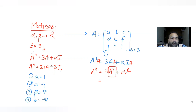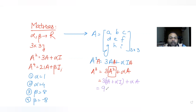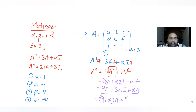I can further substitute A², since I already have it: A² = 3A + αI. So instead of A² I write 3A + αI, giving 3(3A + αI) + αA = 9A + 3αI + αA. Taking A common from the A terms, I get A³ = (9 + α)A + 3αI.